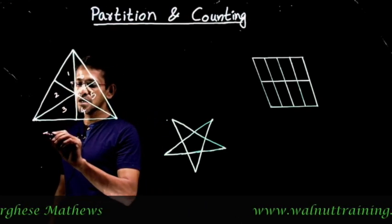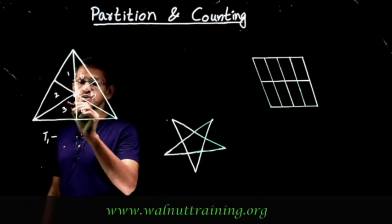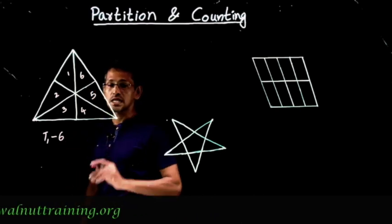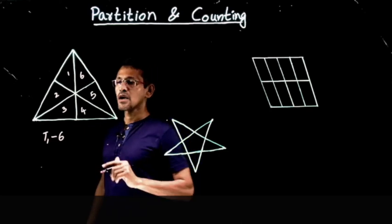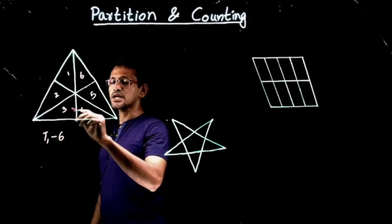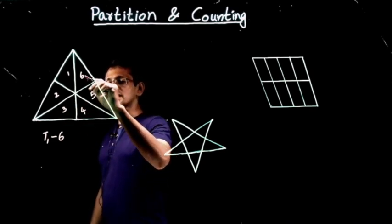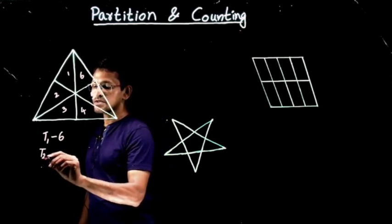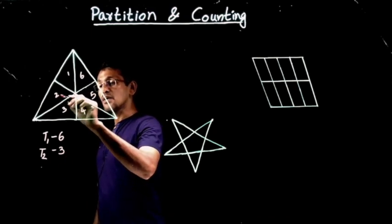I'll mark it as T1. So with one piece at a time, we have six triangles. Now if you take two pieces at a time, how many triangles do we have? These two — one and two together, that's a triangle; three and four together, that's a triangle; and five and six together, that's a triangle. So we have three triangles when taking two pieces at a time.